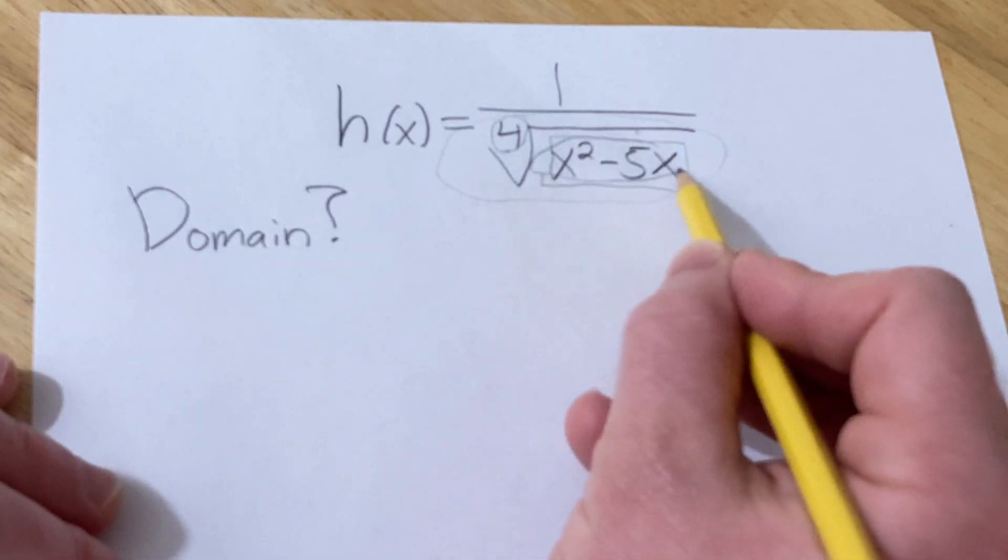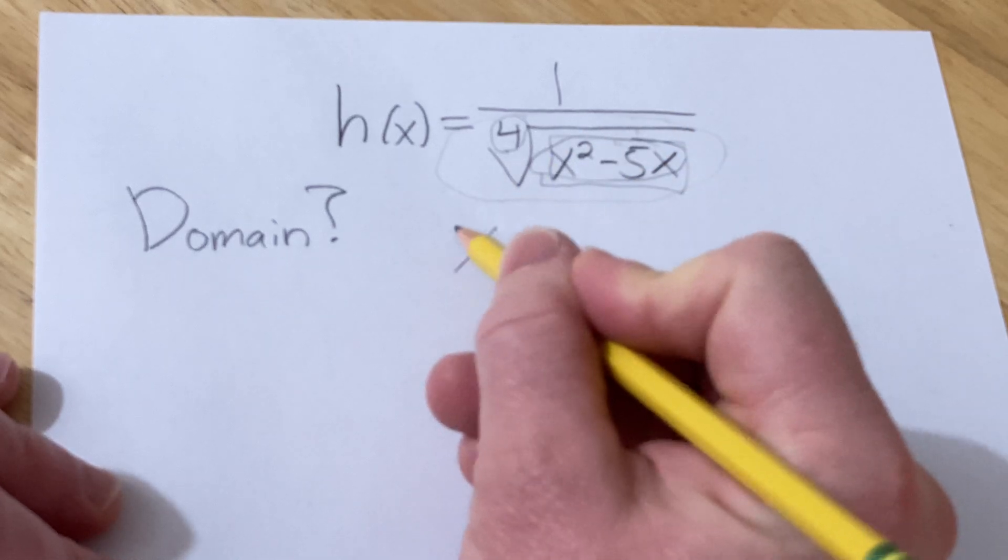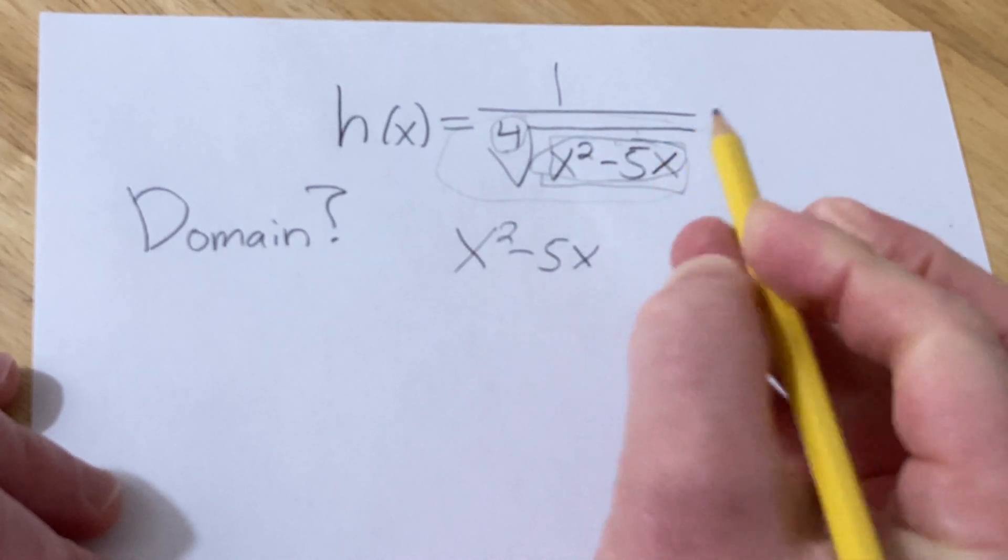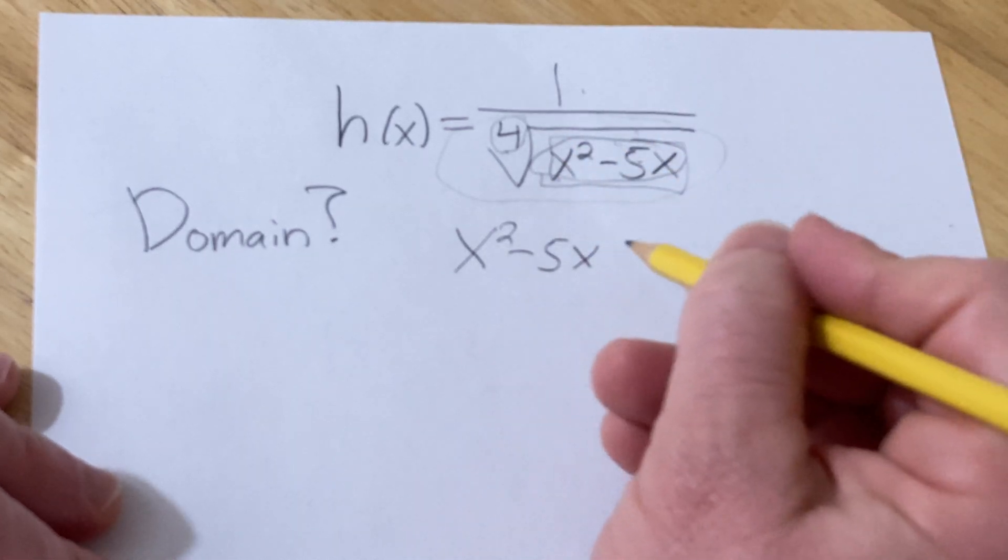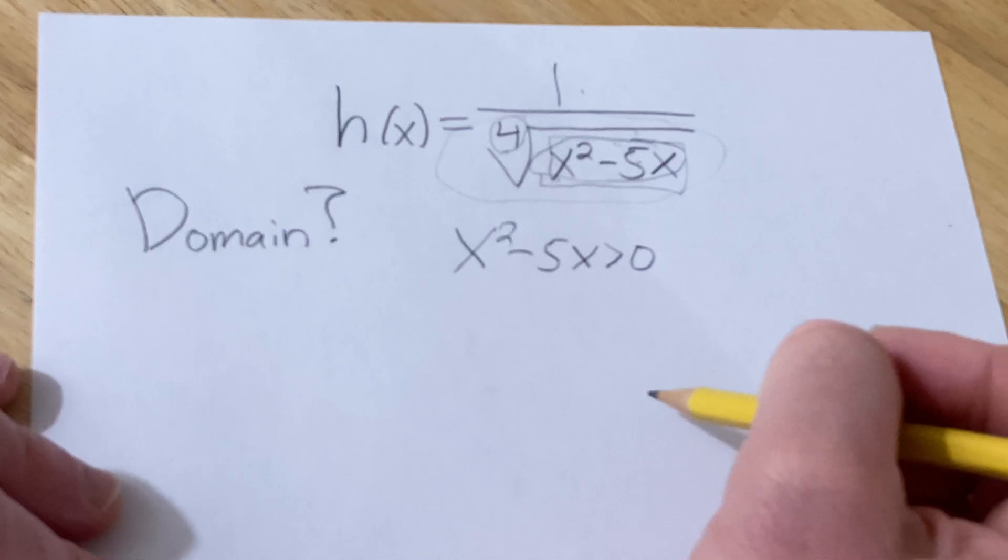Let's focus on that. Whatever is here must be greater than or equal to zero. Actually, it can't be equal to zero because then we would divide by zero, so let's do greater than zero, and that should give us everything.